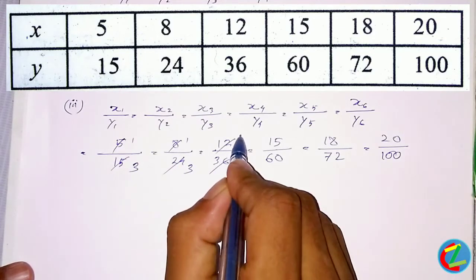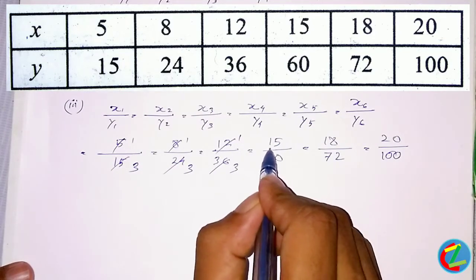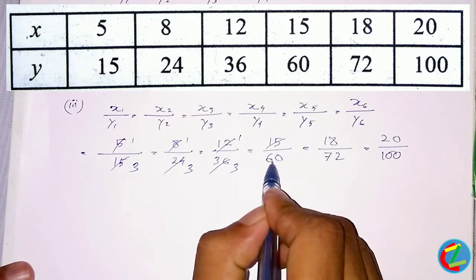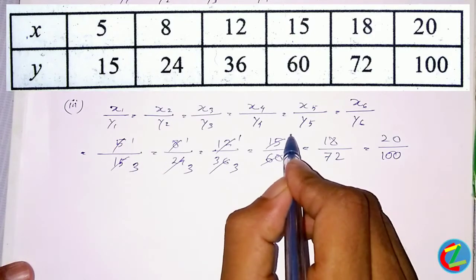18 divided by 32, 18 divided by 32, 18 divided by 32, 18 divided by 32.